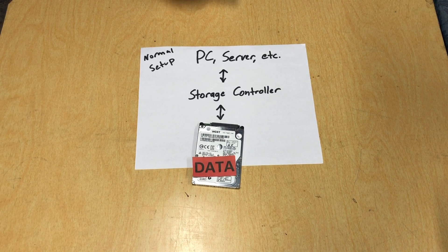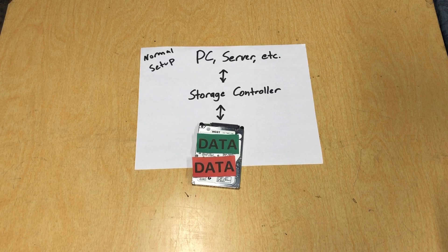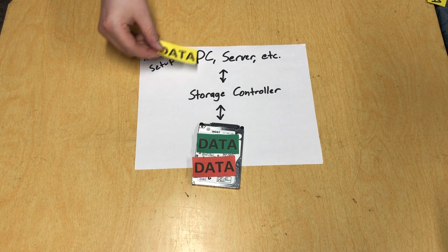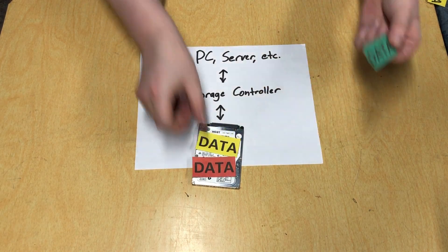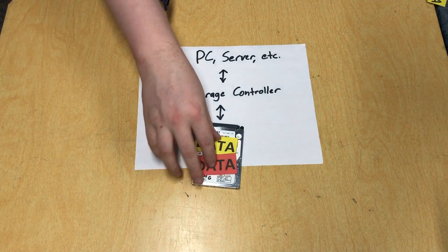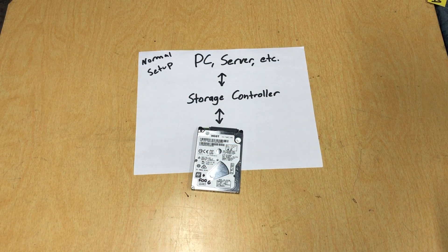Same thing happens when it wants to add some new data, represented here by another color. Computer, storage controller, drive. And if it needs to replace some data, it communicates with the storage controller and replaces that data. And for erasing it, well this is oversimplifying it a little, but the storage controller does that too.